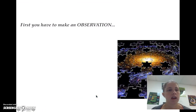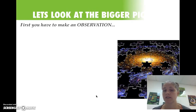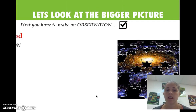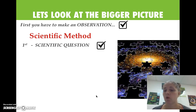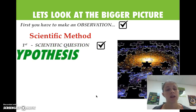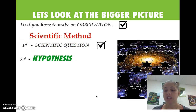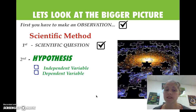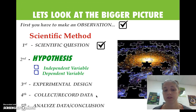So first we've made our observations — remember they're qualitative or quantitative. Then we've asked our scientific question. Remember it goes: how does blank, which is our independent variable, affect blank, which is our dependent variable. Now we need to make our hypothesis, and our hypothesis needs to include our independent and dependent variables.